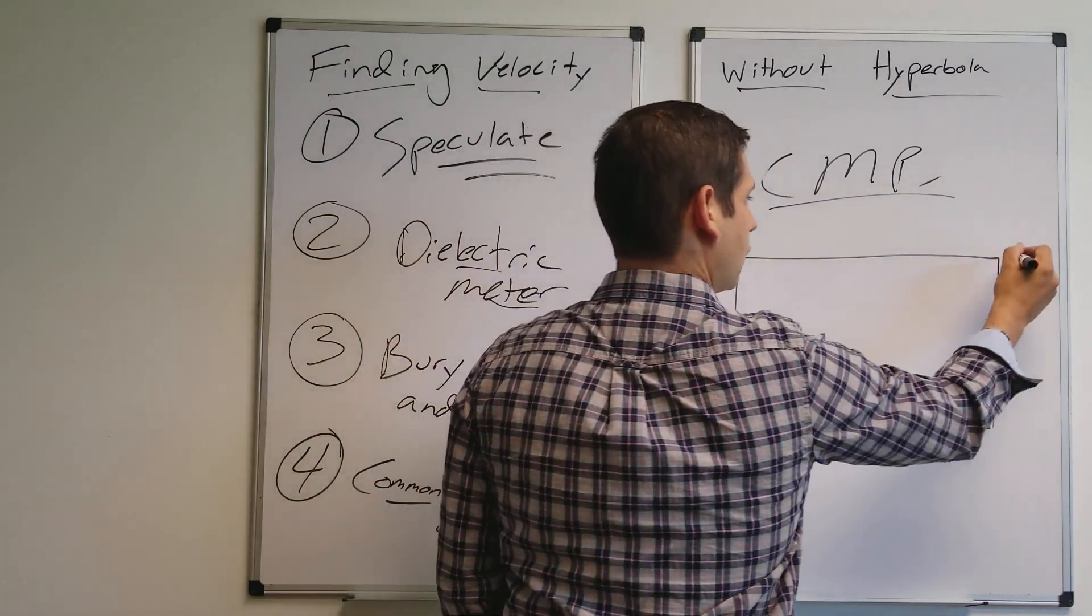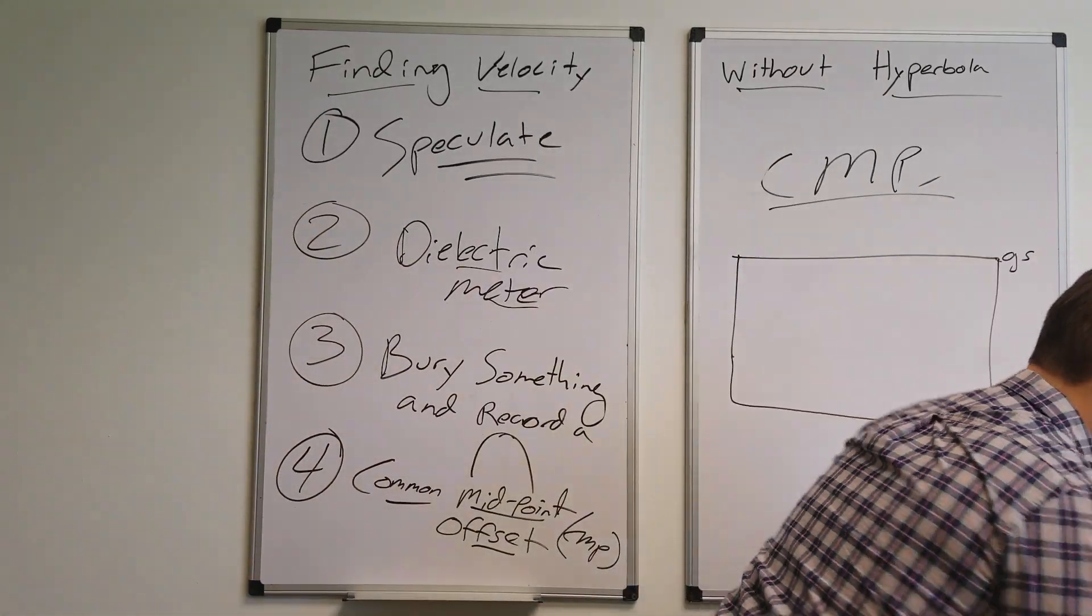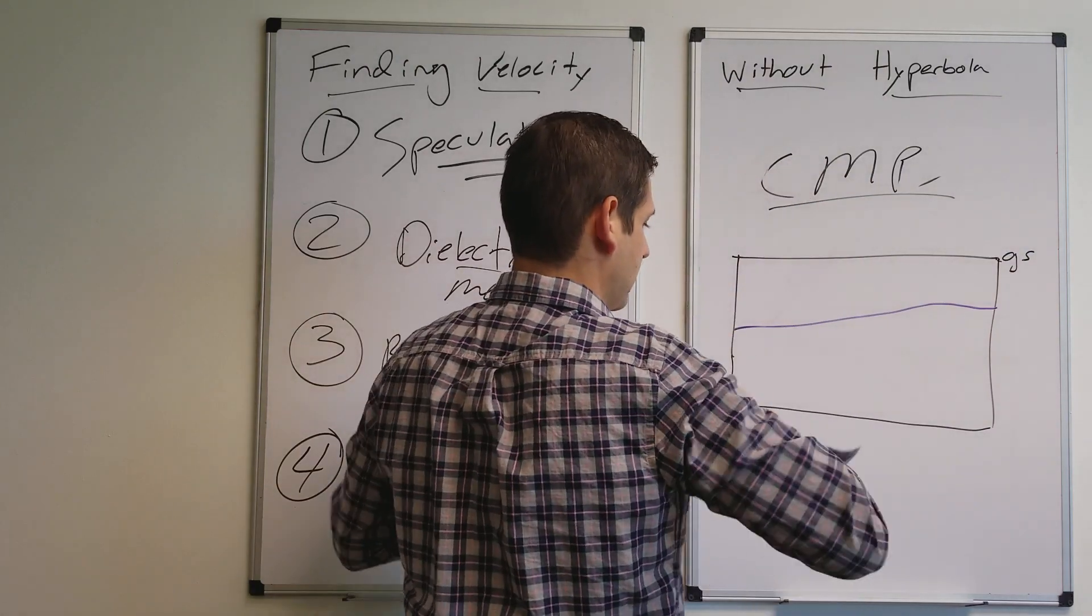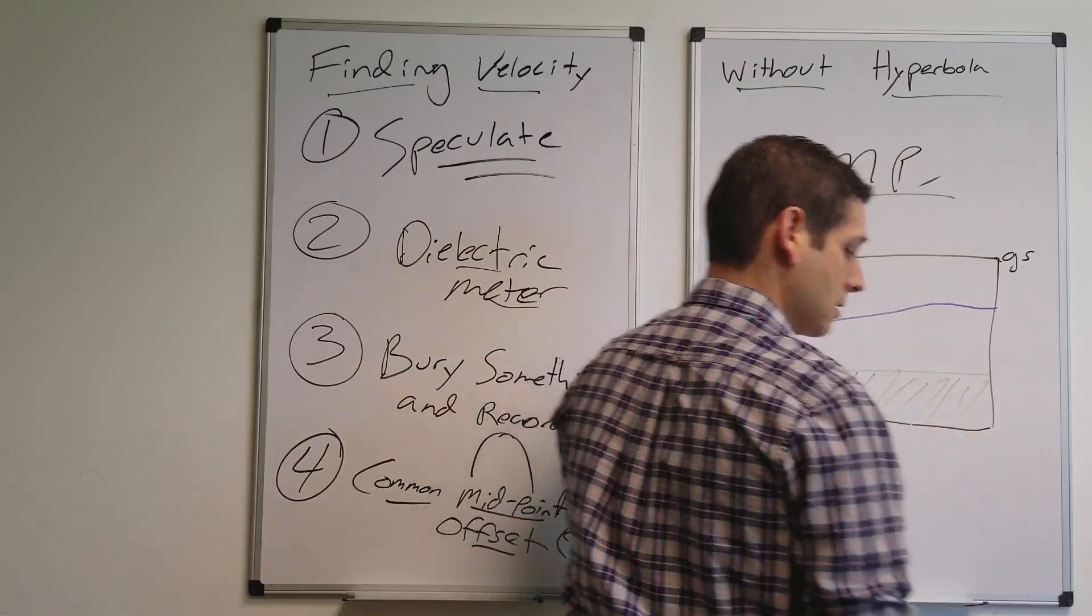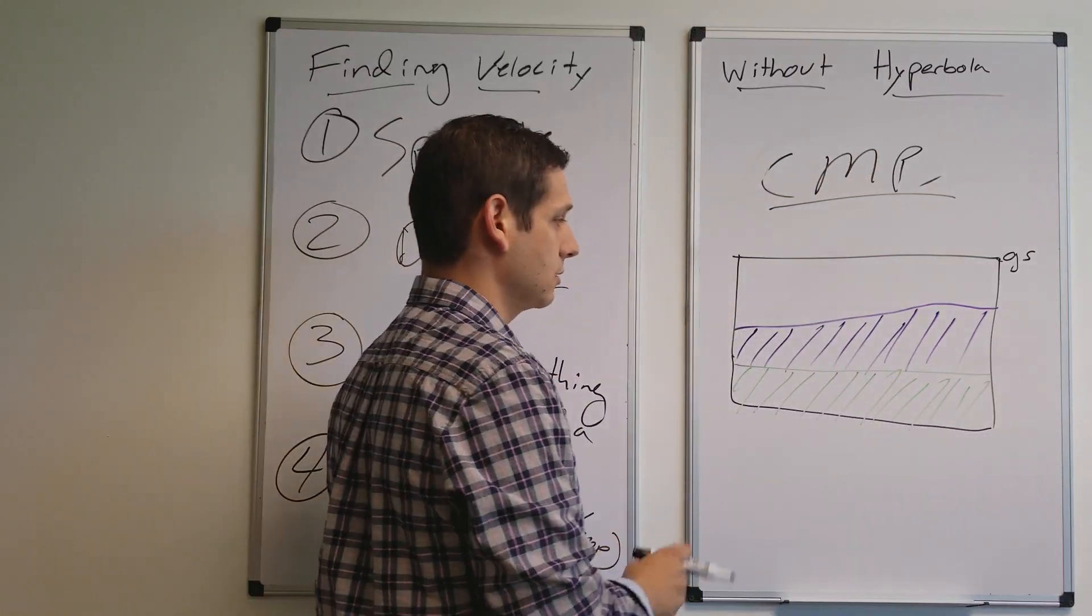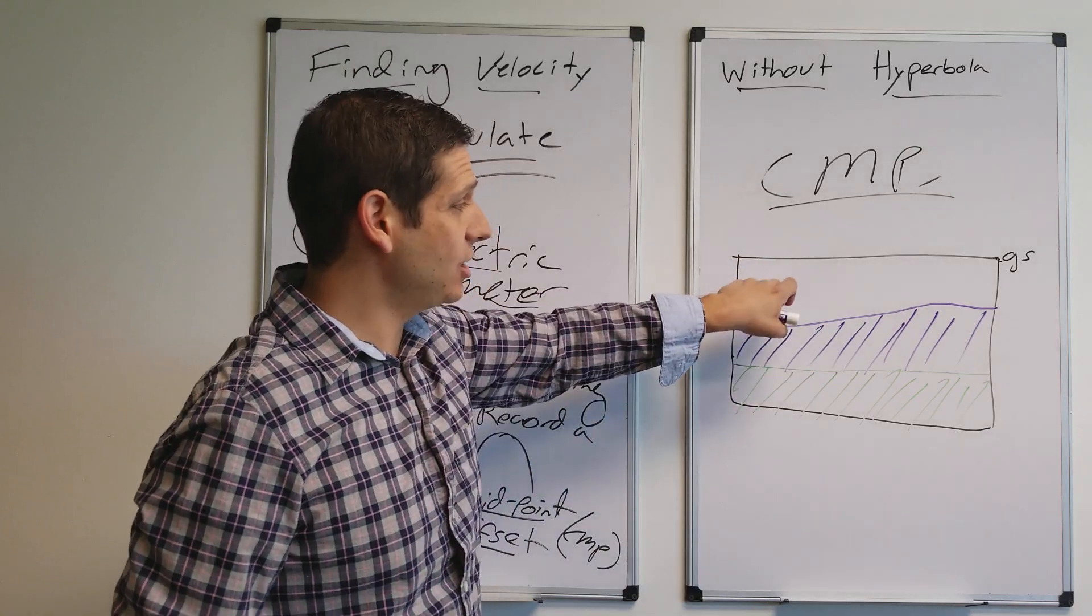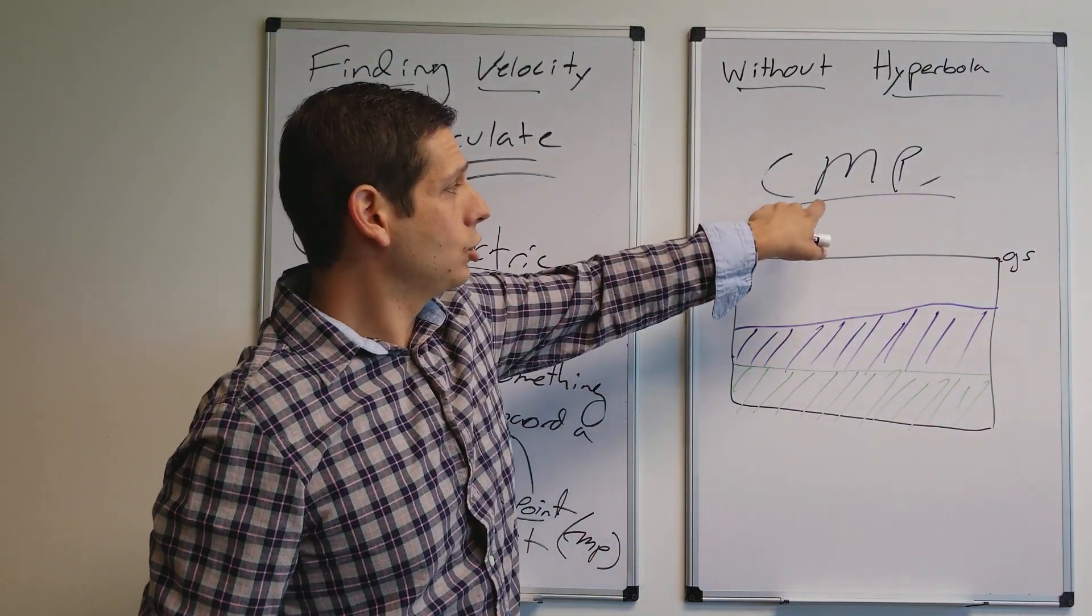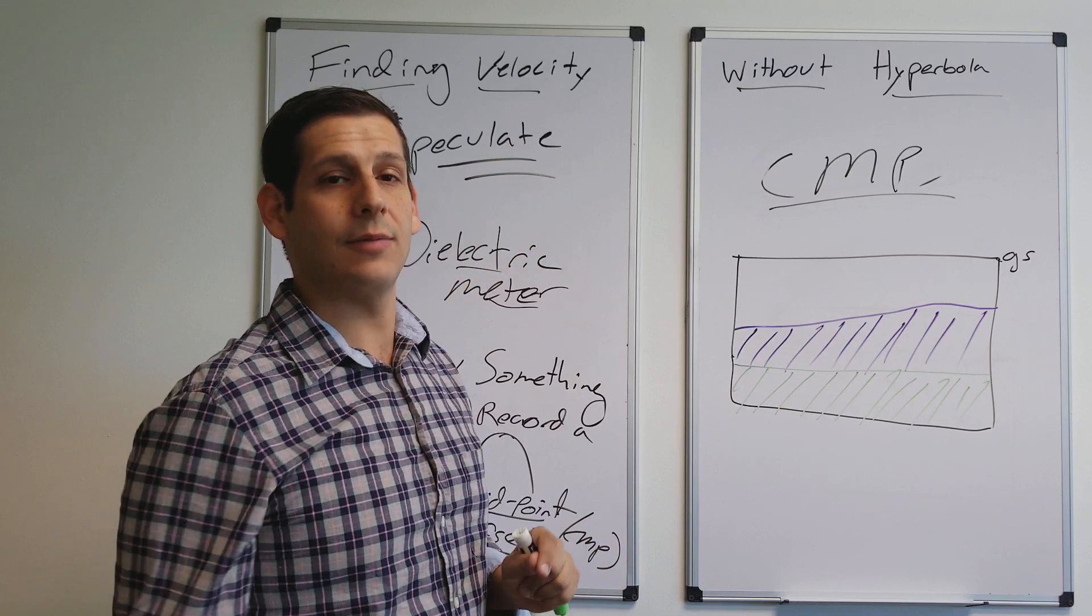So here, ground surface is right here. And let's say that this has a couple layers in there. So here's a layer, and here's another layer. This is the geological layers. You got multiple layers in there. How do you get, and you can't bury anything, how do you estimate the wave velocity or the dielectric permittivity? In this situation, you can use a common midpoint offset.